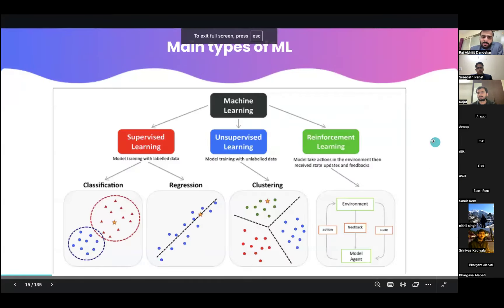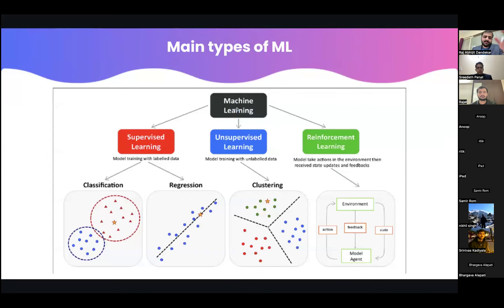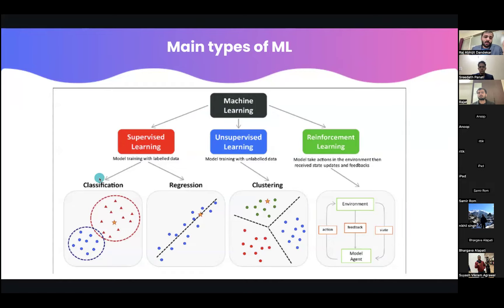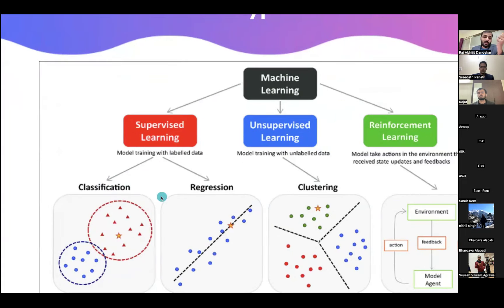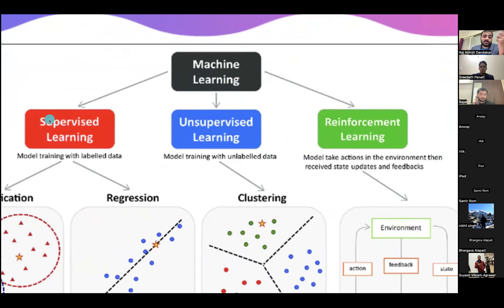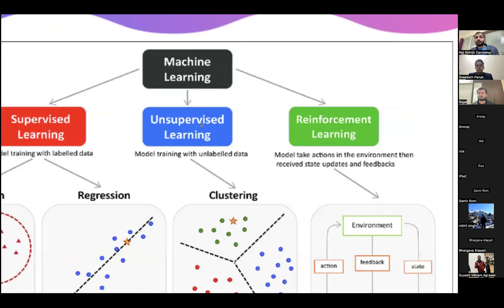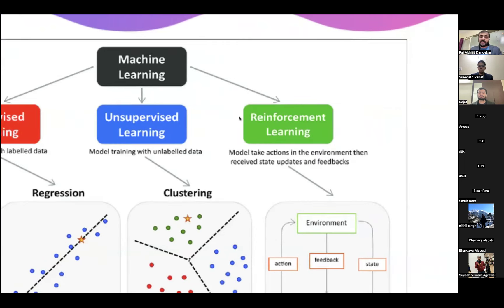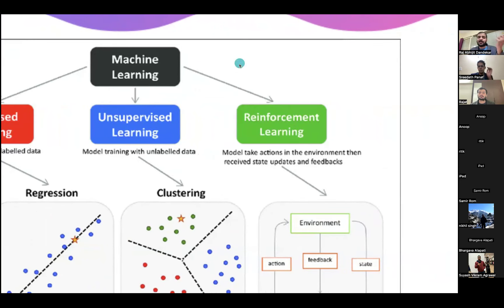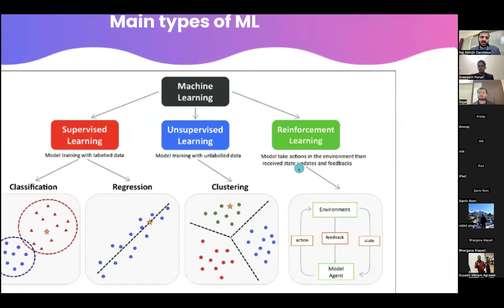Machine learning is divided into three main buckets: supervised learning, unsupervised learning, and reinforcement learning. In supervised learning, we provide labels — for example, images of cats and dogs and we build a classifier to distinguish between them. Unsupervised learning has no labels; you give huge amounts of data and ask the algorithm to cluster or form patterns on its own. Reinforcement learning is a gamified environment — think of AI beating humans in chess or AlphaGo. These are the three fundamental types of ML.